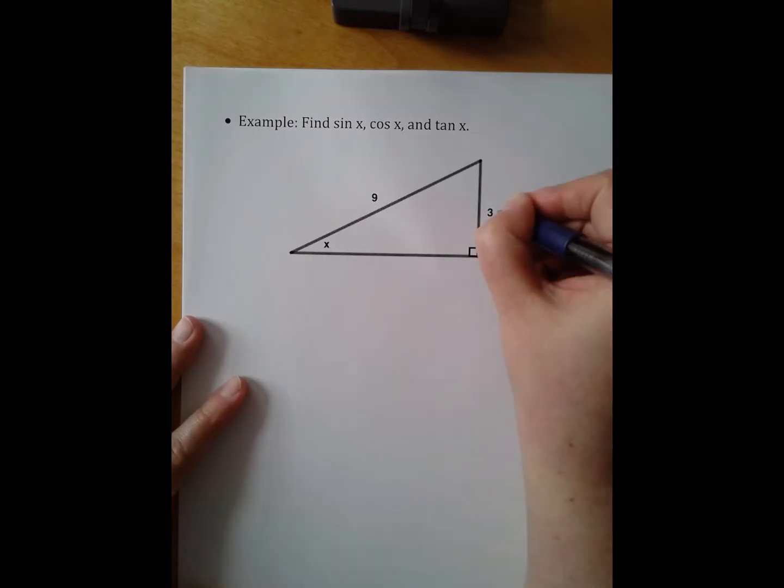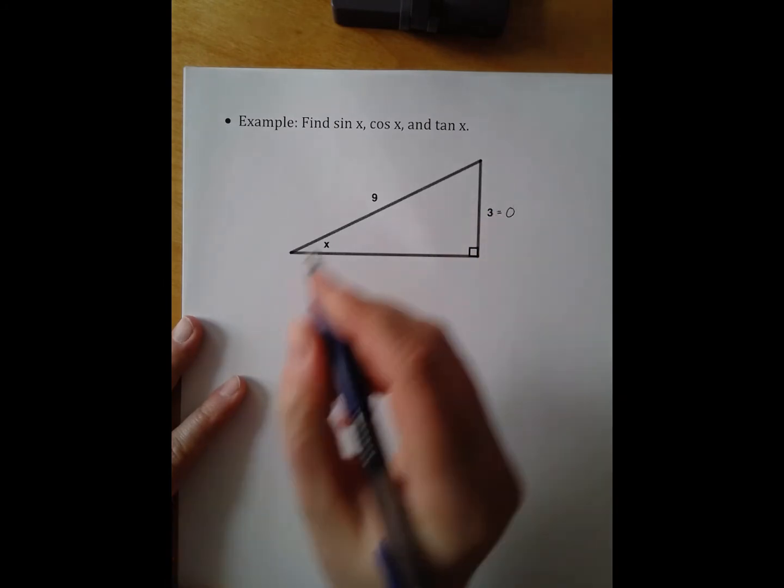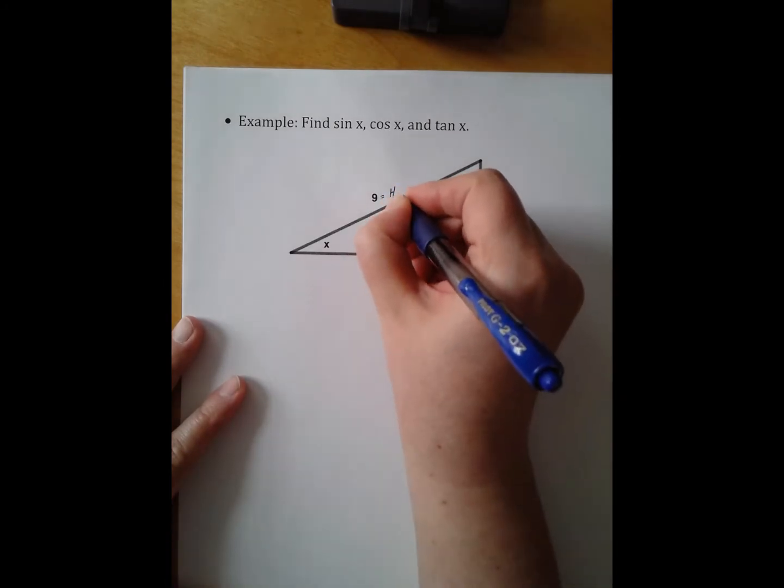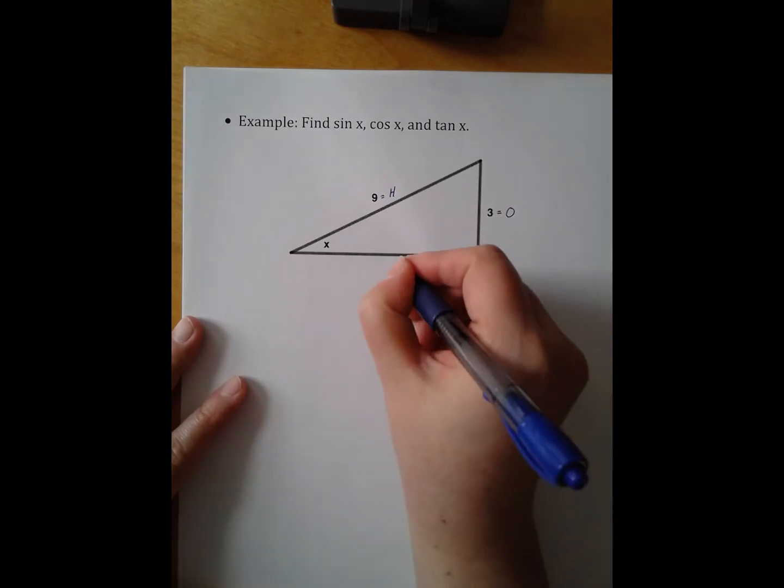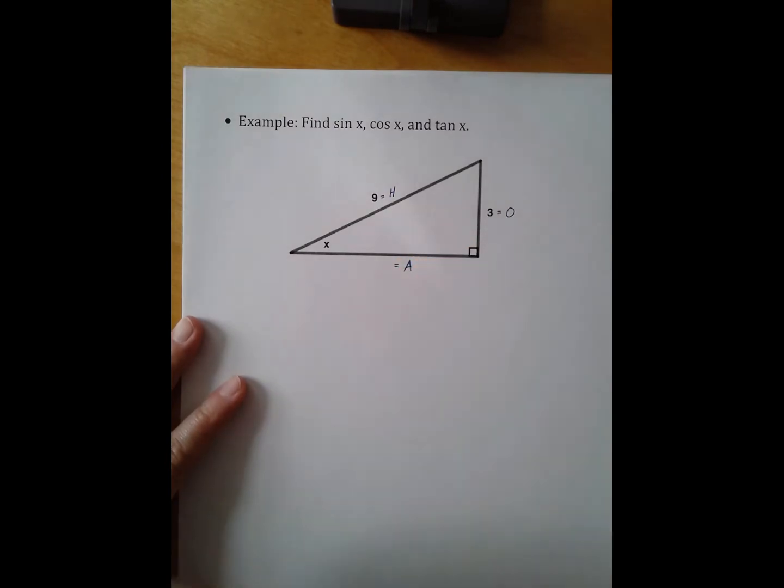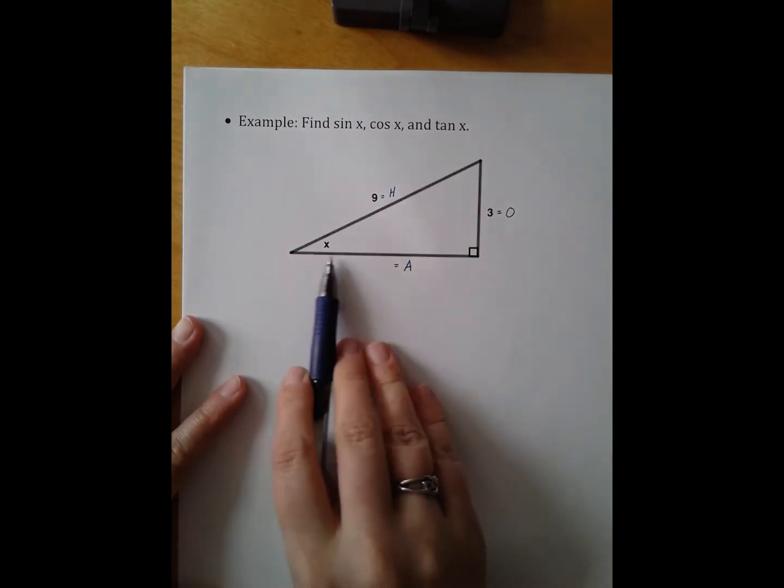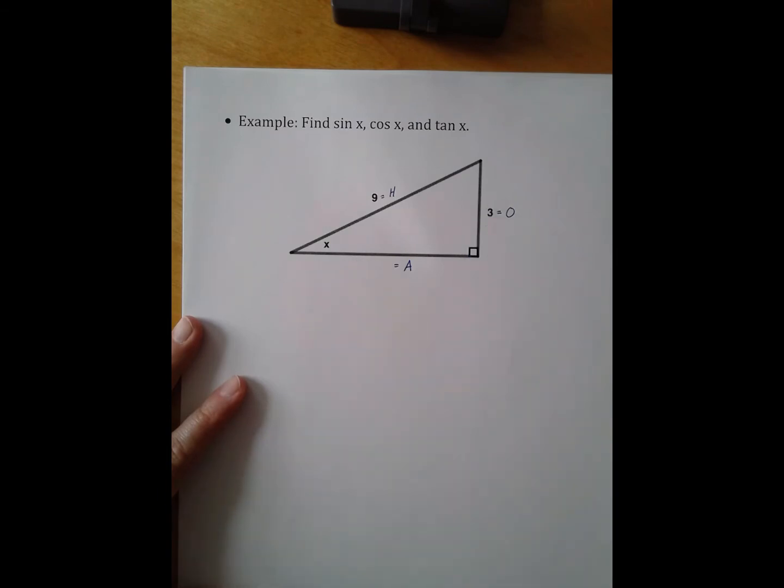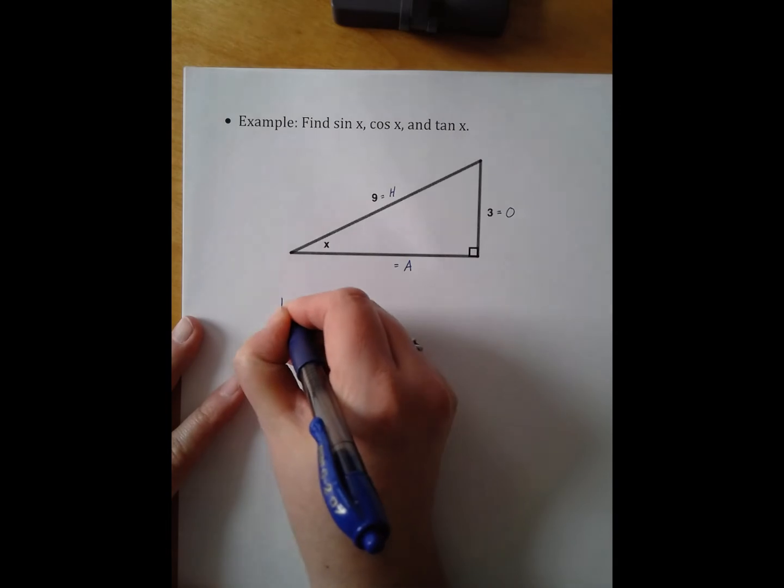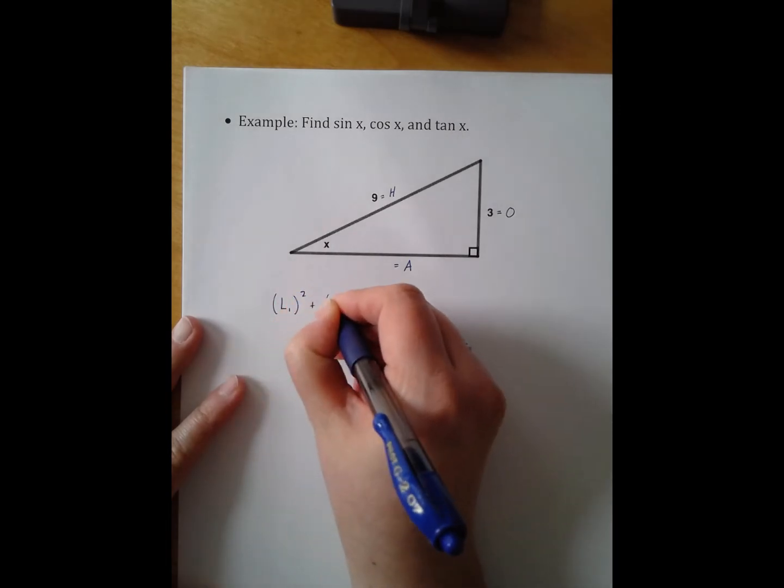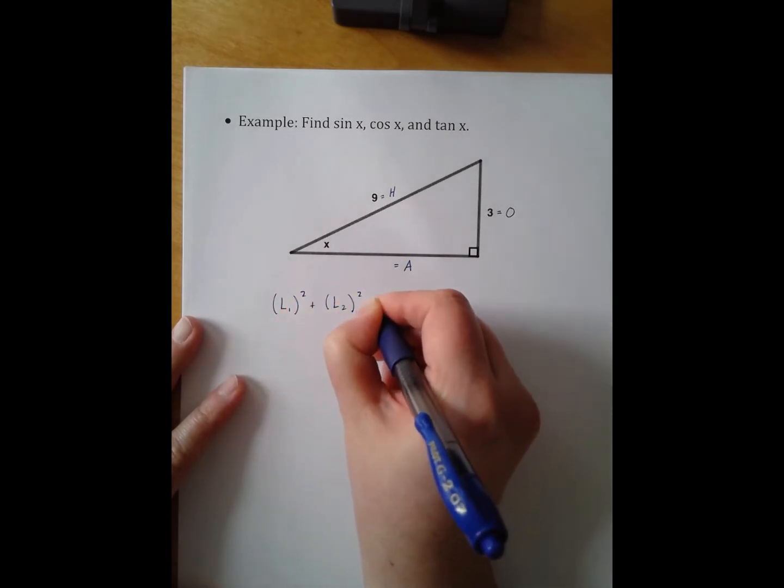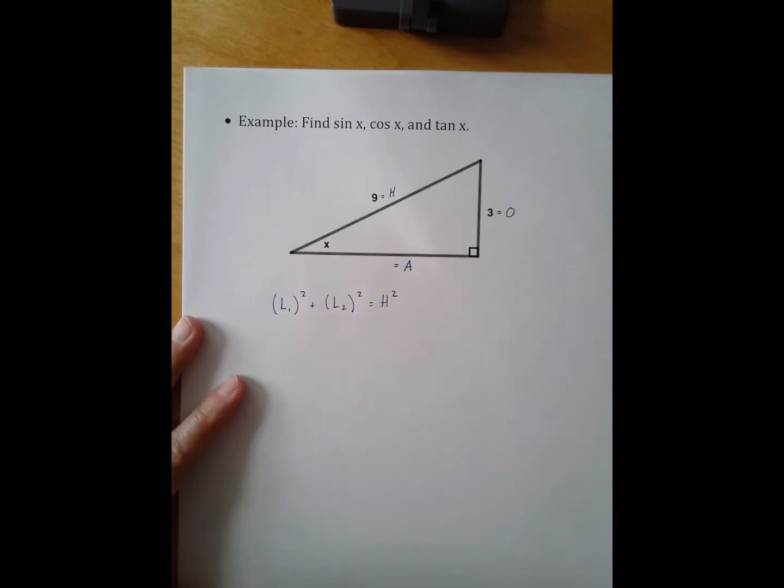So the first thing I'm going to do is label and say, look, three is my opposite side and nine is my hypotenuse side. But I need to find my adjacent side. You'll remember that since we have this as a right triangle, we can use the Pythagorean theorem. So I have leg one squared plus leg two squared equals hypotenuse squared.